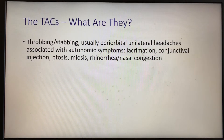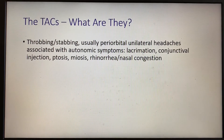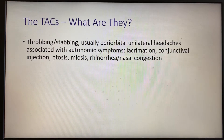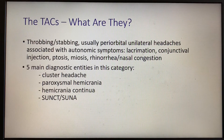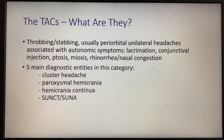Examples of autonomic symptoms are lacrimation, conjunctival injection, ptosis, miosis, rhinorrhea, or nasal congestion. There are five main types of TACs, and we're going to talk about each of these in detail.